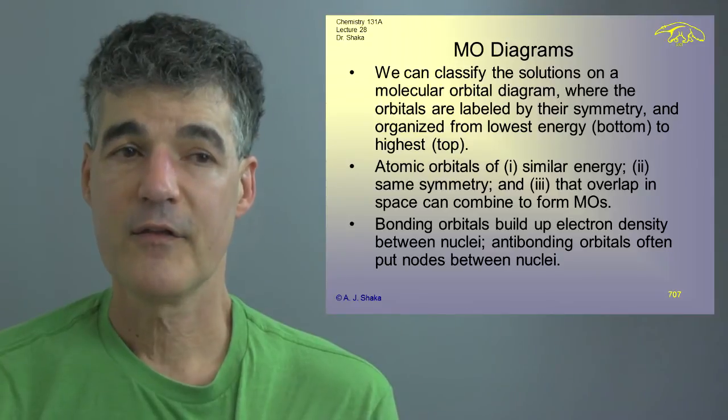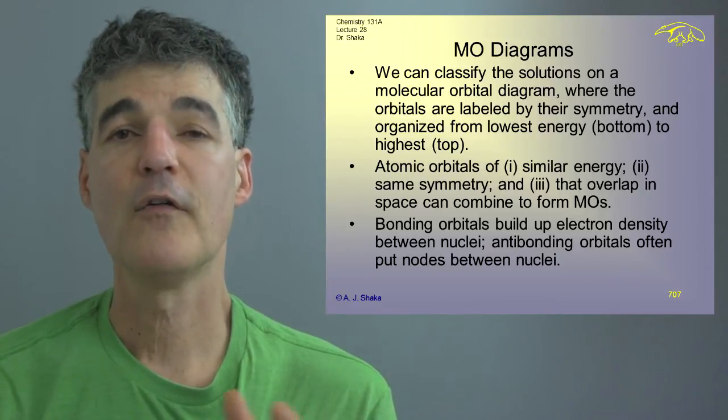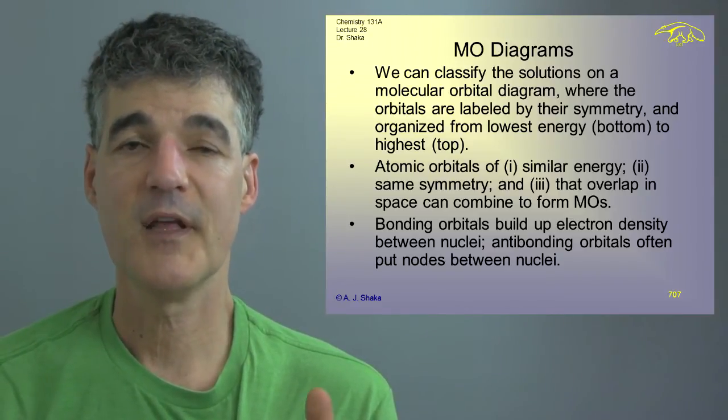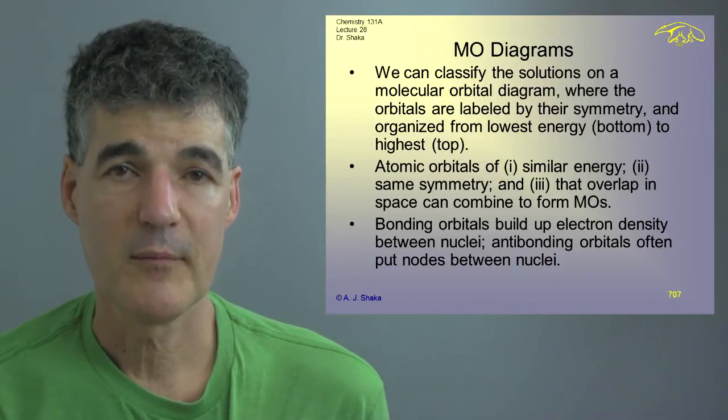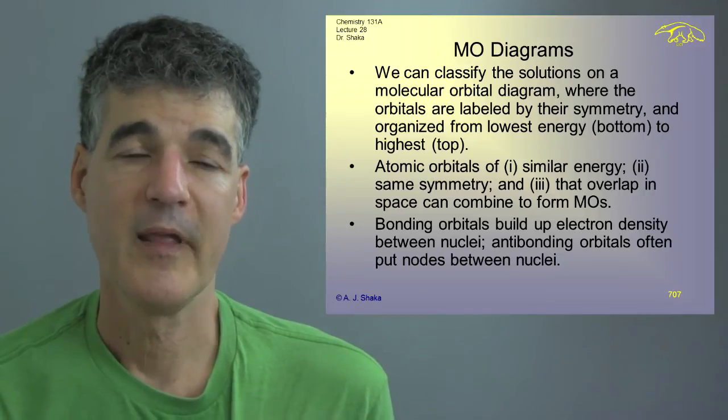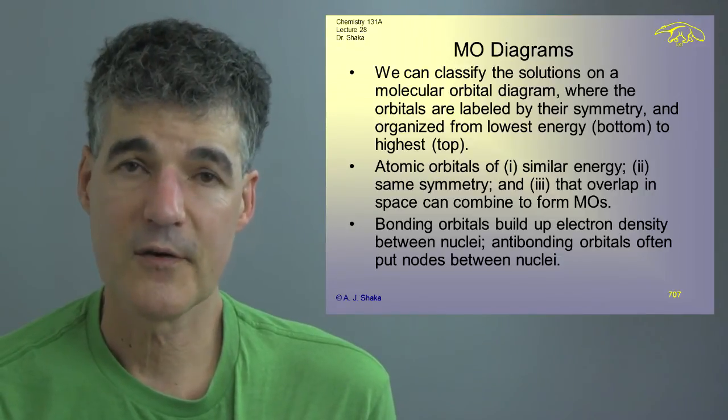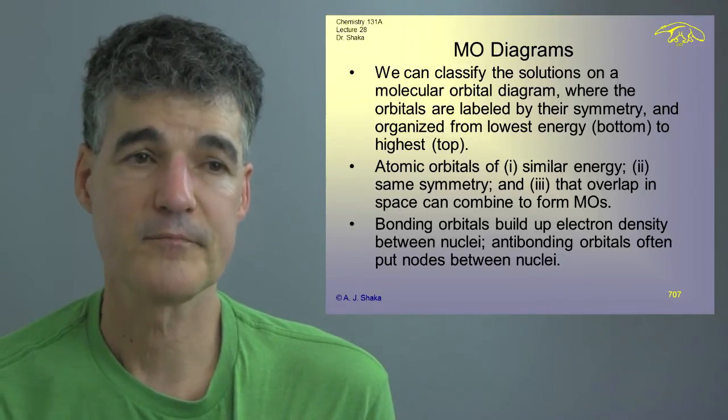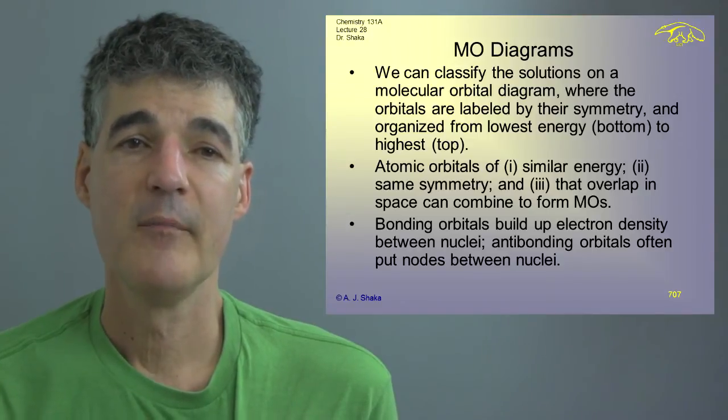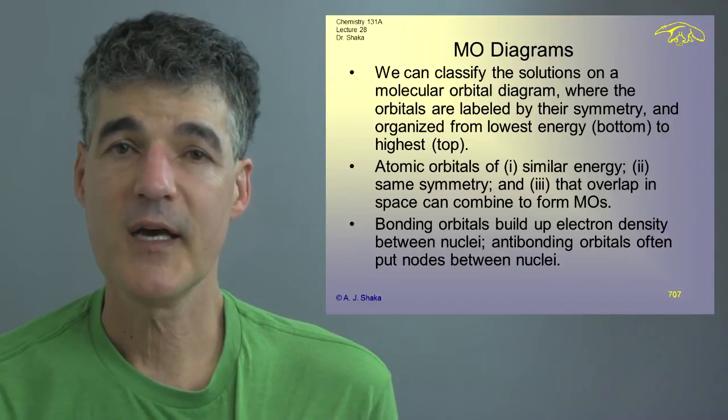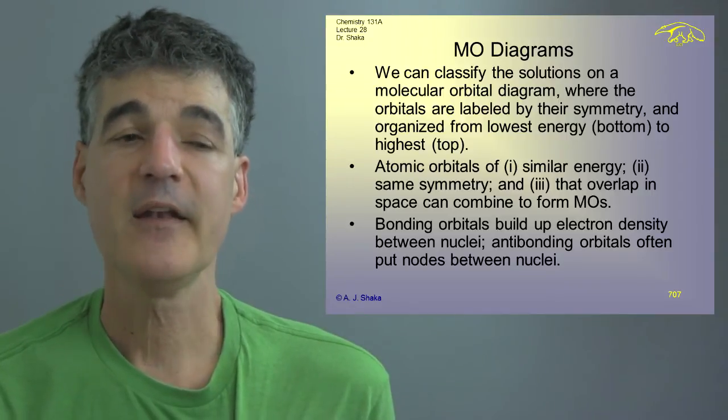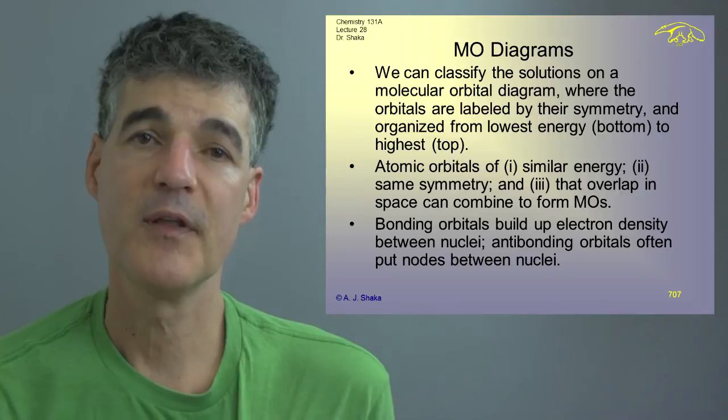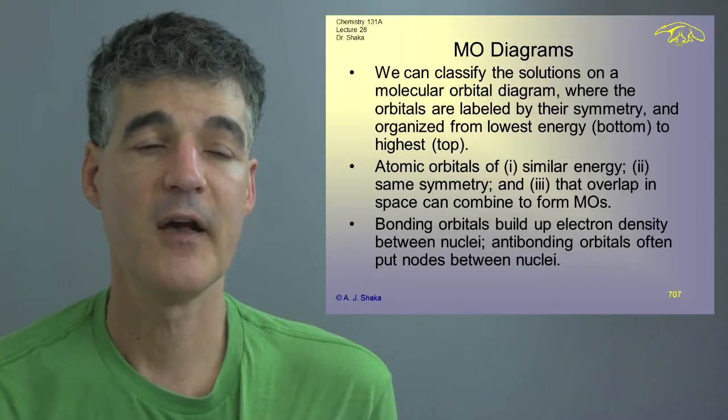And then the third condition is that they have to overlap in space because if they don't overlap in space, if the atoms are miles apart, there's not going to be a molecular orbital possible. They only have to be pairwise though if you have more than two. And bonding orbitals then build up electron density in between the nuclei. Anti-bonding orbitals often put nodes between the nuclei, and that's how you can tell.